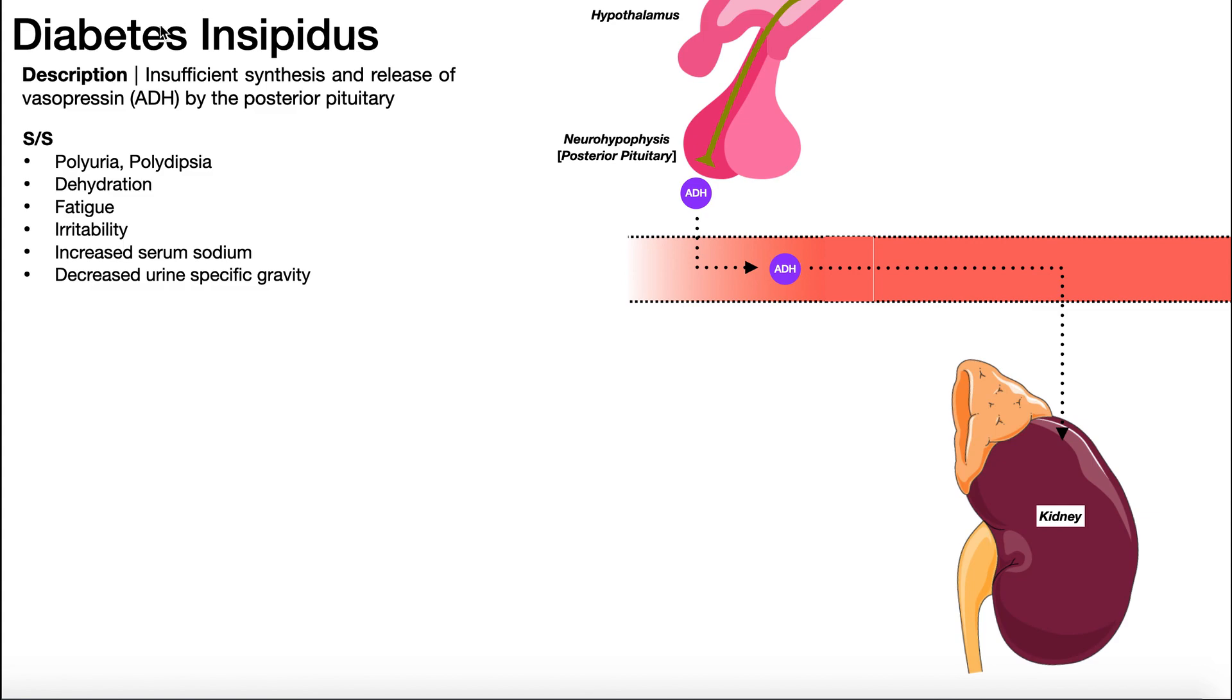When you see diabetes insipidus, you need to think water balance. Specifically, this condition is an insufficient synthesis and release of a hormone called vasopressin, also called antidiuretic hormone or ADH, by the posterior pituitary.